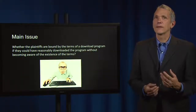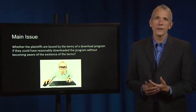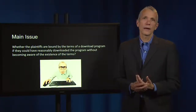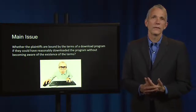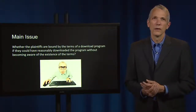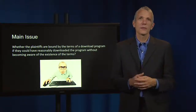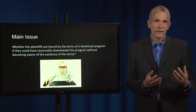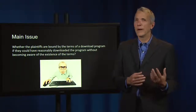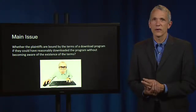The Second Circuit sided with the plaintiffs. They ruled that an offeree must receive clear notice of a contract's associated terms if a download is to constitute acceptance of those terms. A contract requires mutual assent. Because plaintiffs did not assent to the contractual terms and could not be expected to be aware of the terms' existence, they are not bound by the arbitration clause.